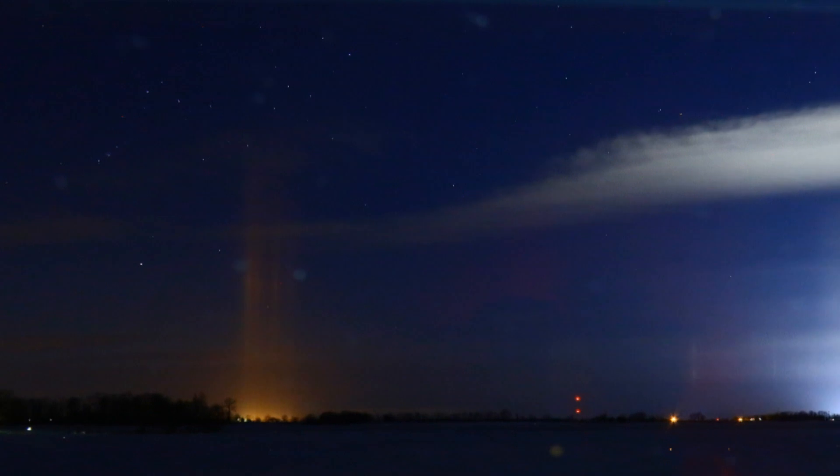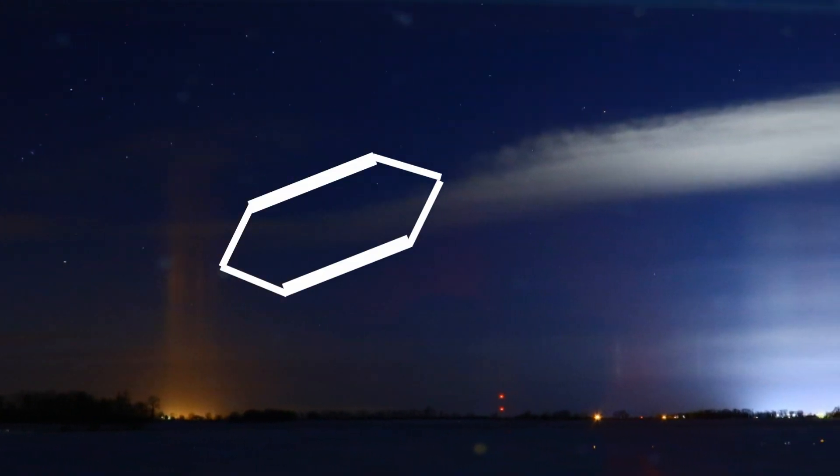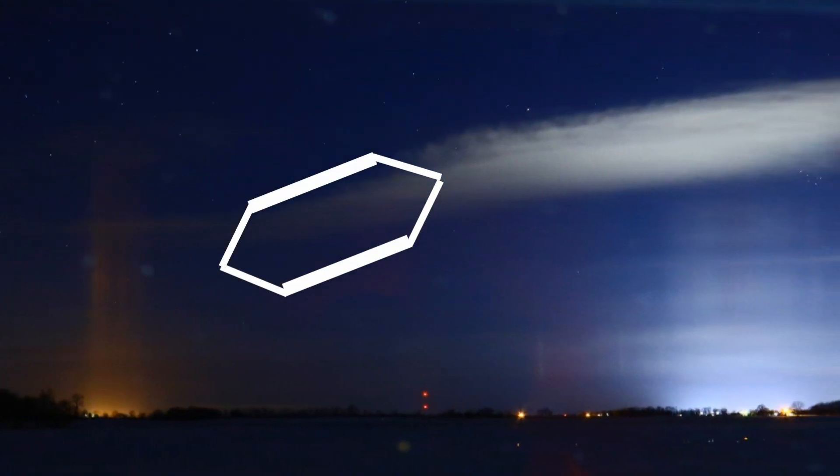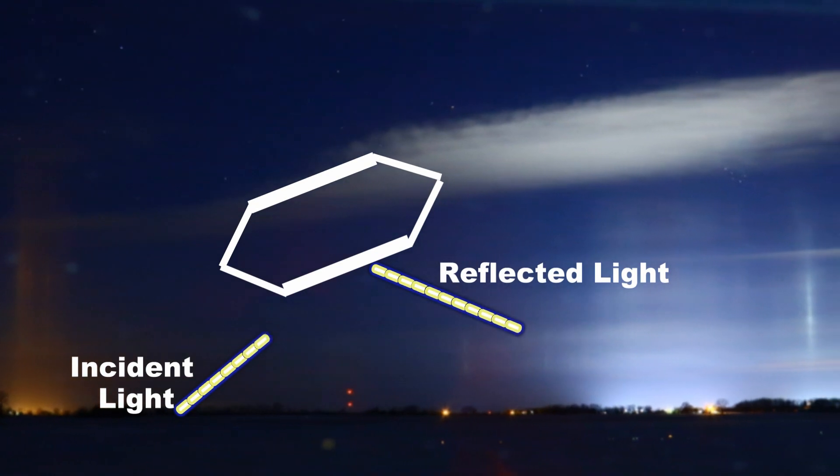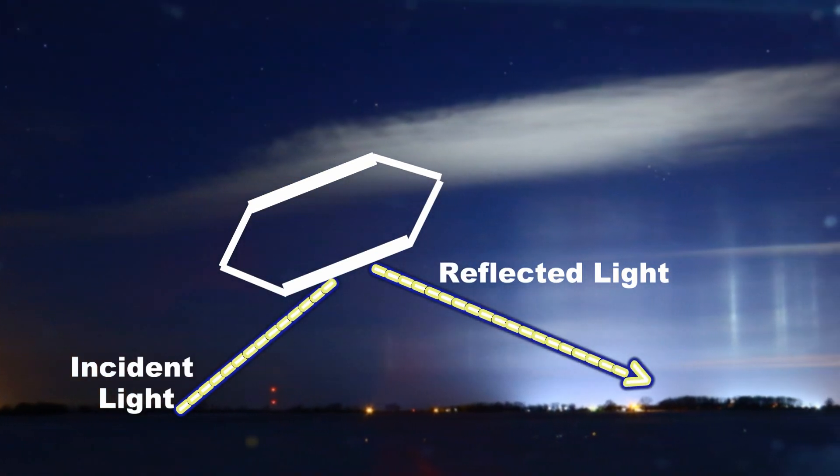In the case of light pillars, these hexagonal platelets are flat and they act like mirrors to interact with light and reflect it upward or downward. They tend to orient themselves more or less horizontally as they fall through the air, with each flake acting like a tiny mirror to reflect the light through the atmosphere. The higher concentration of ice crystals we have, and the bigger they are, the more pronounced the phenomenon.